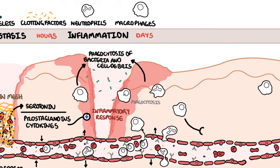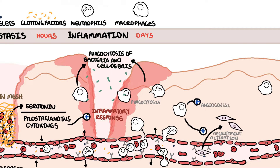Macrophages play many roles, including phagocytosis of bacteria and tissue debris, recruitment and activation of fibroblasts, endothelial cells, and more inflammatory cells, as well as angiogenesis, which is the formation of new blood vessels. And lastly, promoting the extracellular matrix synthesis, which is important to create new tissue.